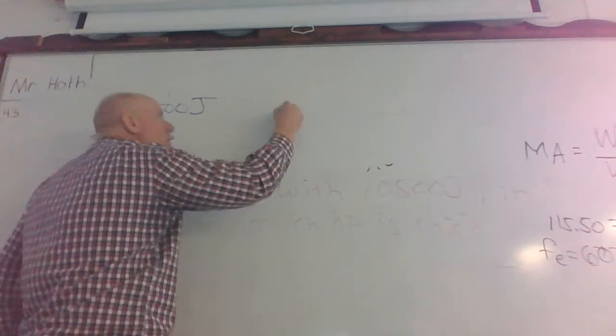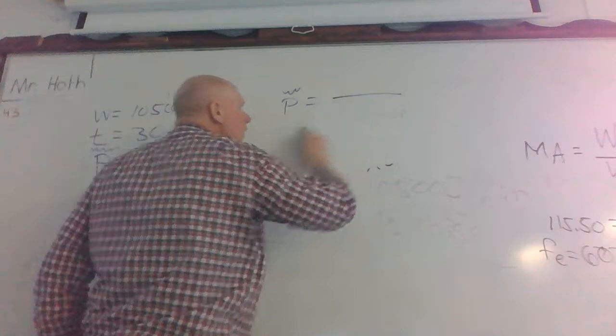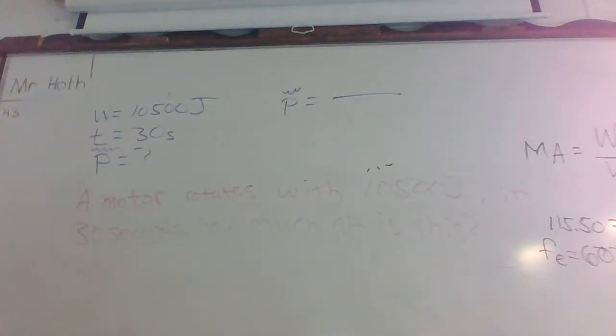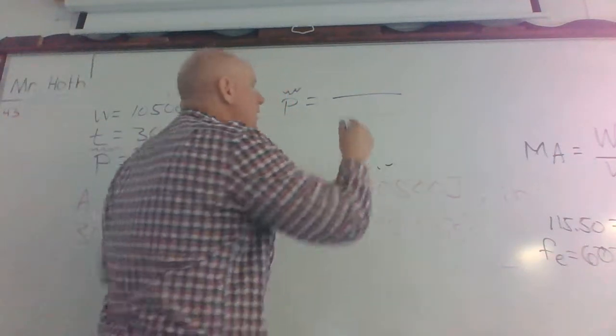So now, this power, then, equals what over what? Yeah, force times distance divided by time, which force times distance means work. So it's the same thing. So we've accounted for that force and distance already. So 10,500 divided by 30.